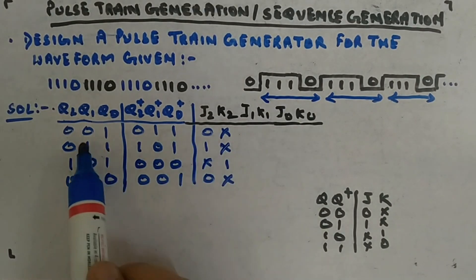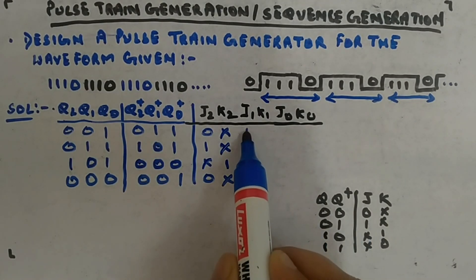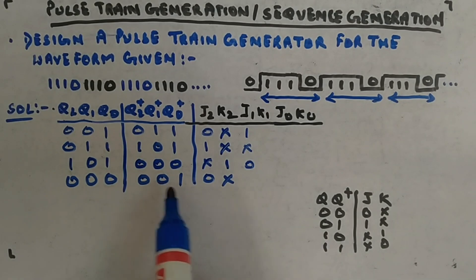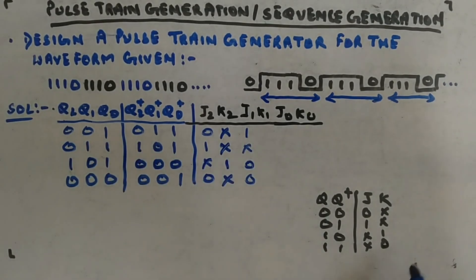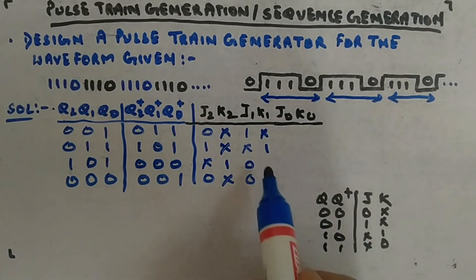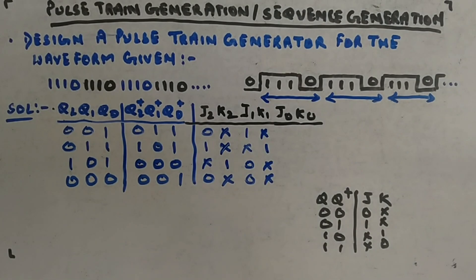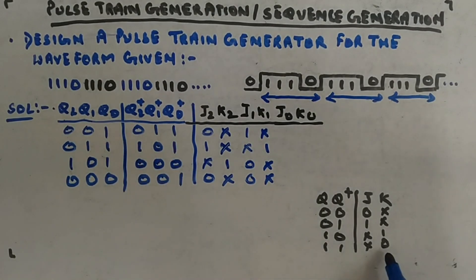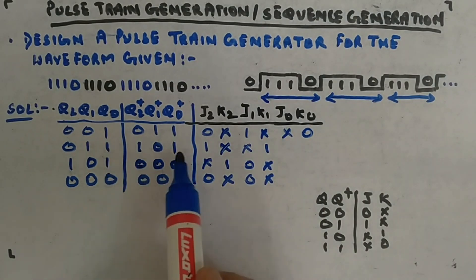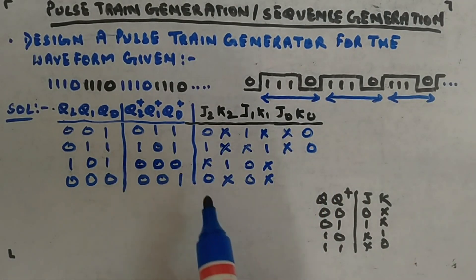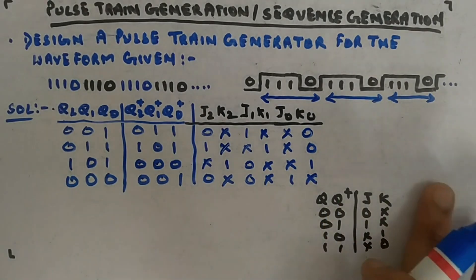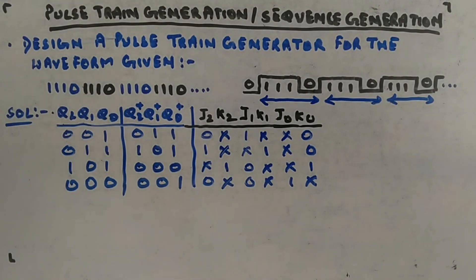For Q1 transitions: J1 values are 1, ×, 0, 0 and K1 values are ×, 1, ×, ×. For Q0: looking at transitions one-one, one-one, one-zero, zero-one gives J0 and K0 entries as cross, 0, cross, 1 for J0, and cross, 1 for K0 respectively. With the excitation table complete, we can now proceed to K-maps for each input.